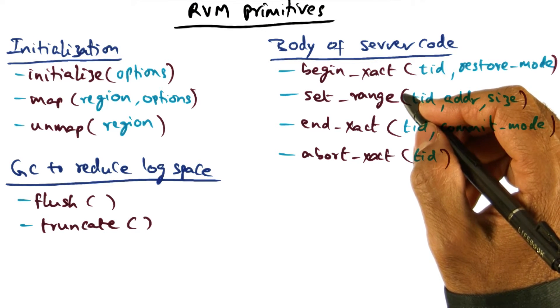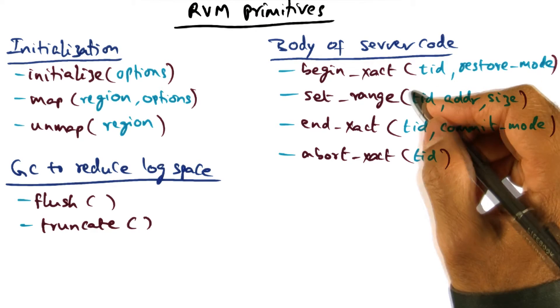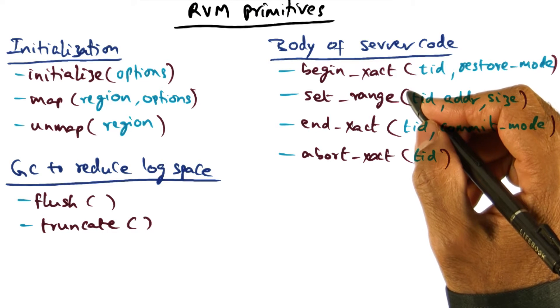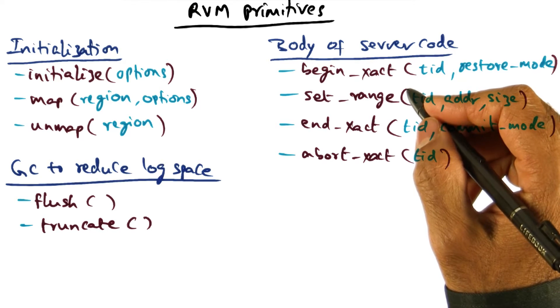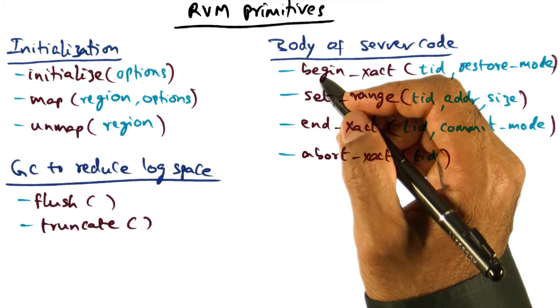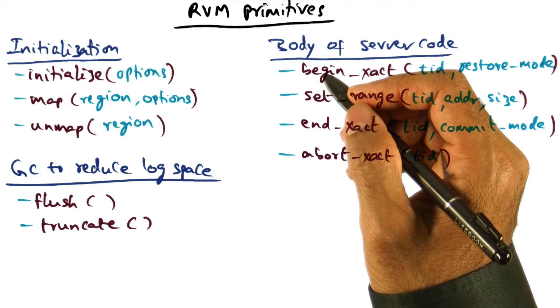Once the redo logs from the log segment have been applied into the external data segments, the redo logs can be thrown away. This part is what is called truncation.